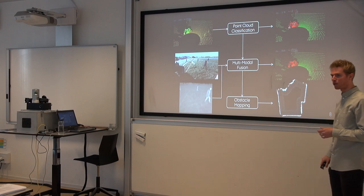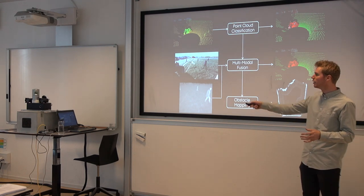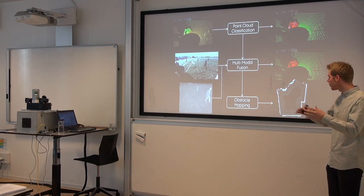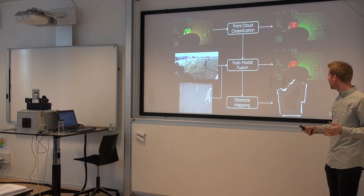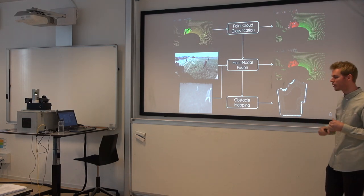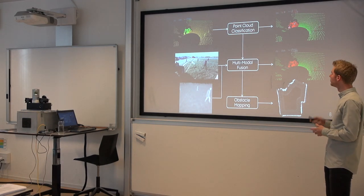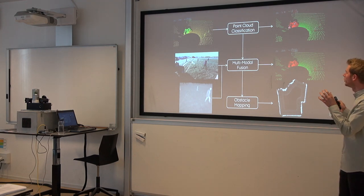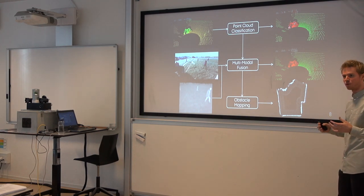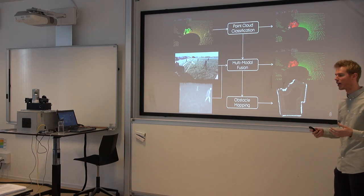Then I'll talk about obstacle mapping, which goes from a local representation in the LiDAR frame or in pixel coordinates to a global representation of the environment as a map. A map like this the vehicle can then use to navigate. But in order to develop all these methods, train and test them, they are all data-driven, so we need a lot of data acquired in an agricultural environment.